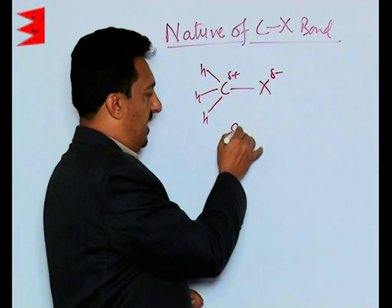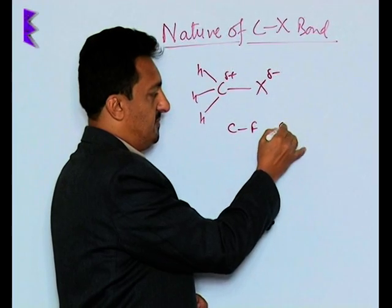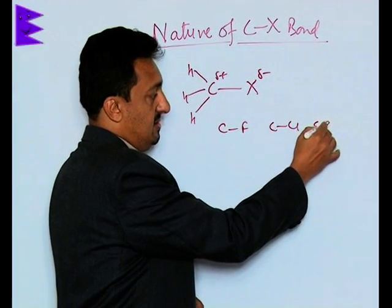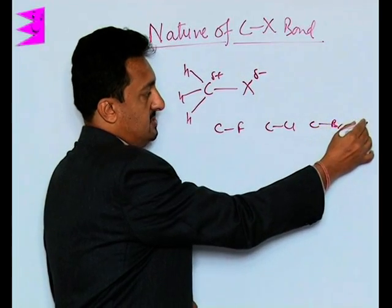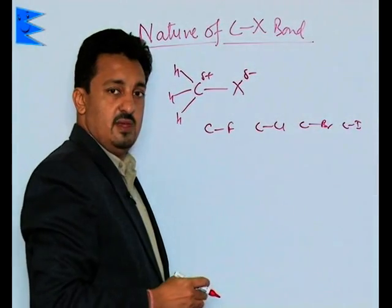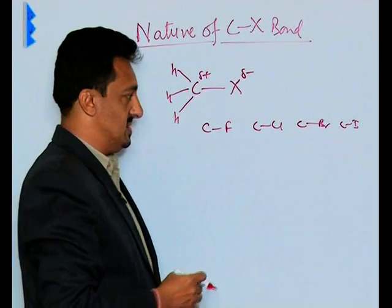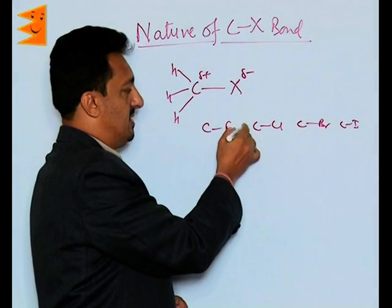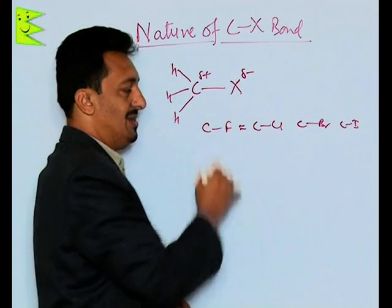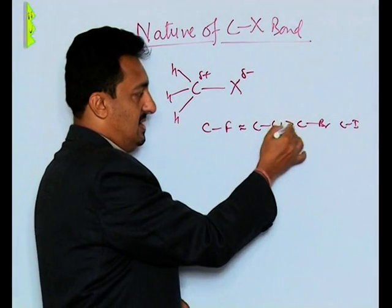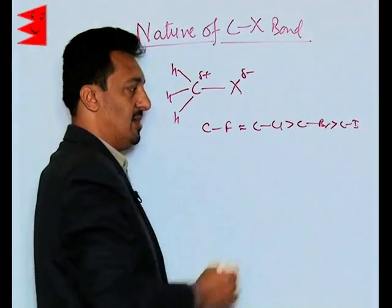That is why we find C-F, C-Cl, C-Br, and C-I. When we see all these four C-X bonds, we find that the dipole moment of C-F and C-Cl is approximately the same, whereas it decreases with the increase in the atomic number of the halogen.